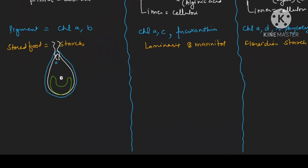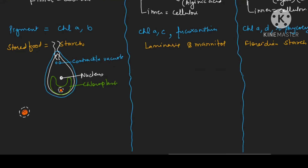They are having two contractile vacuoles. Now focus the diagram carefully: inside the chloroplast you find the pyrenoid. In the pyrenoid, the center is protein over which starch is deposited — a starch coating forms around it. Let me draw the diagram: center protein coat, over which starch is deposited — this starch coating is going on.